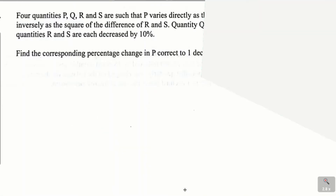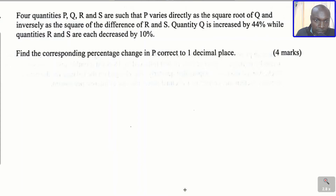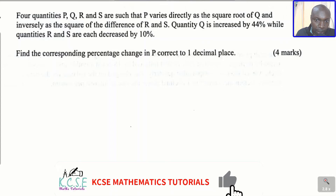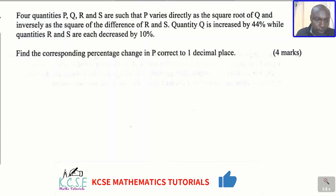Question number six. Four quantities P, Q, R, and S are such that P varies directly as the square root of Q and inversely as the square root of the difference of R and S. Quantity Q is increased by 44% while quantities R and S are each decreased by 10%. Find the corresponding percentage change in P, correct to one decimal place.